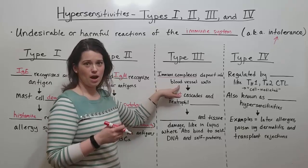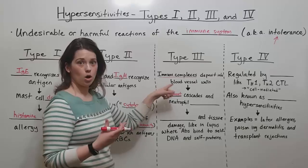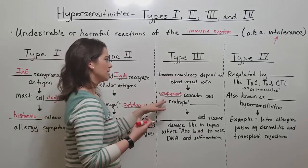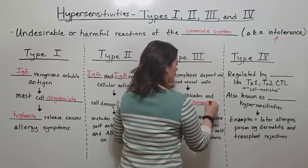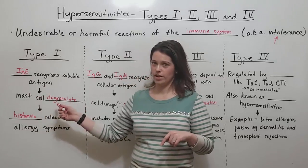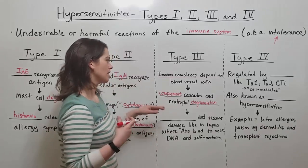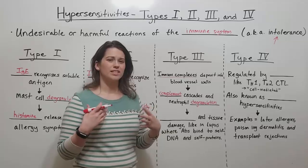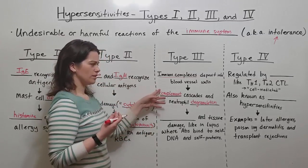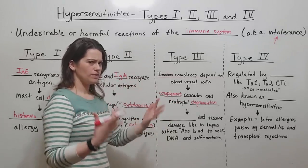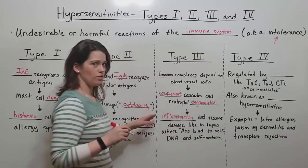When complement cascades cause the death of pathogens, that's a good thing. When they result in the death of host cells — as in type 3 hypersensitivities — that's harmful. Something else that happens when immune complexes deposit into blood vessel walls is neutrophil degranulation. Like mast cells in type 1, neutrophils spill out their contents, which includes many cytotoxic enzymes meant to degrade and break down things. The resulting complement activity and neutrophil degranulation cause widespread inflammation and tissue damage in the body.